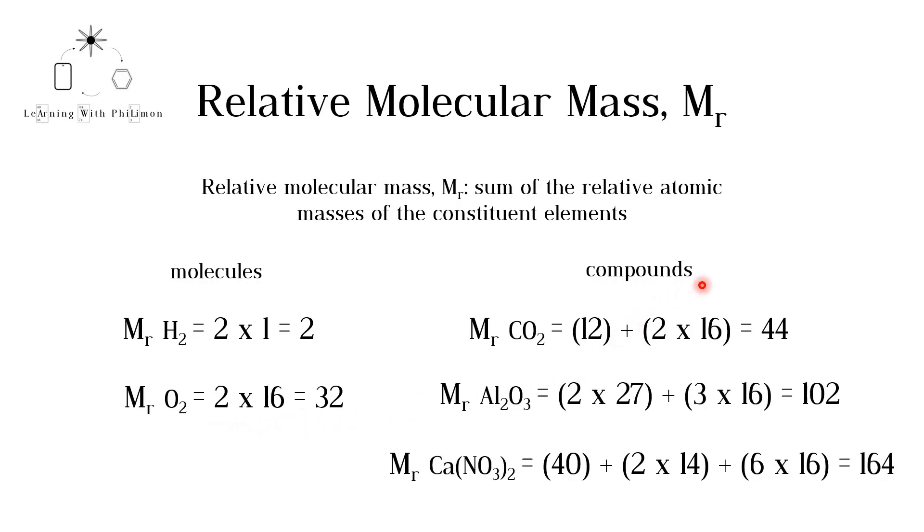Now let's look at compounds where more than one type of element is involved. Ensure that you are always checking the relative atomic mass on the periodic table and not the atomic number. For carbon dioxide, CO2, we add 12 from the carbon to 2 times 16 for the two oxygen atoms.